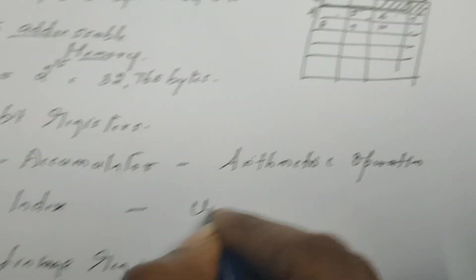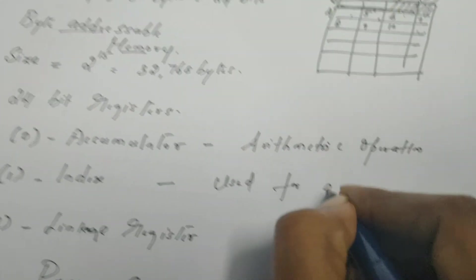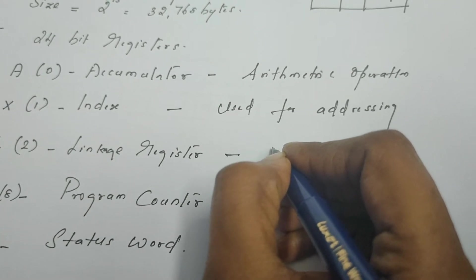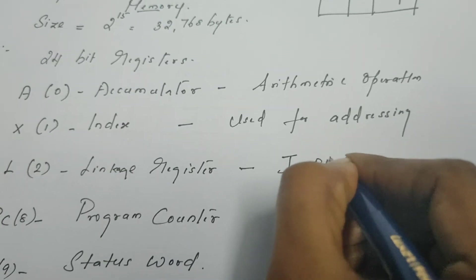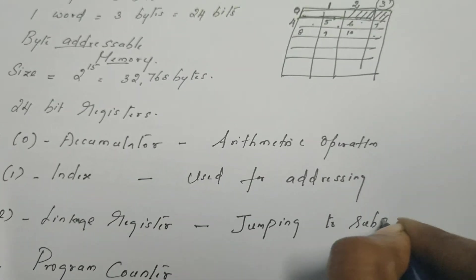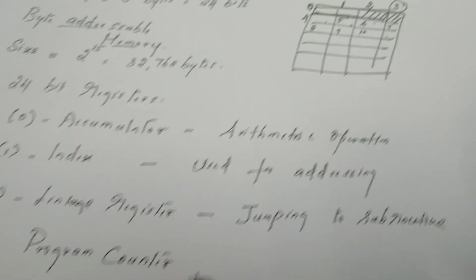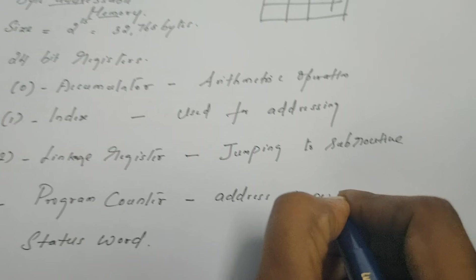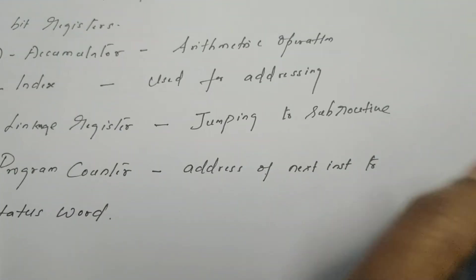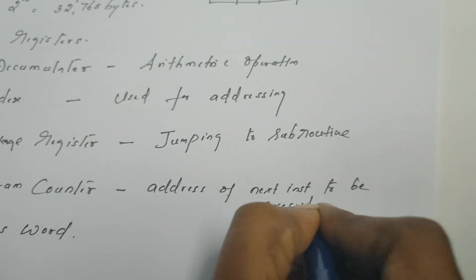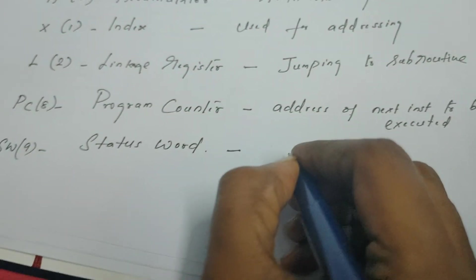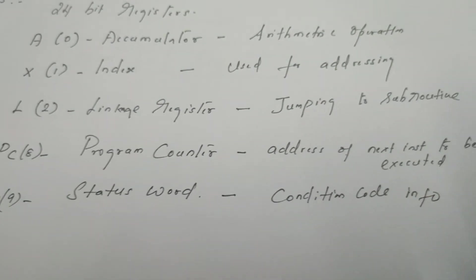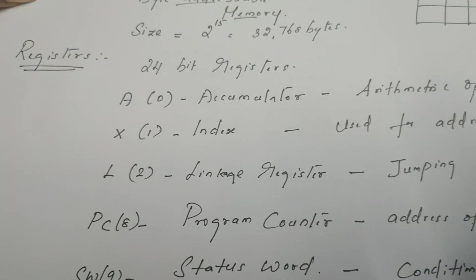The index register is used for address calculation and addressing. The linkage register is used at the time of jumping to subroutines — when program control is transferred to another subroutine. The program counter always contains the address of the next instruction to be executed. The status word contains a lot of information, including condition code information.